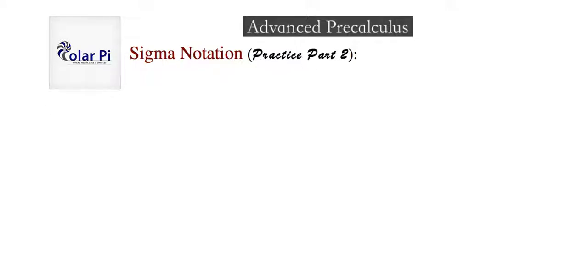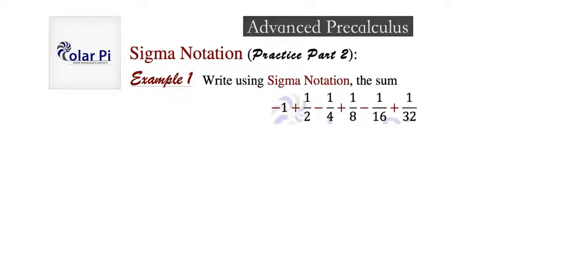Hey guys, practice part two here, and we'll have a total of five examples of which this is the first. And this first example is pretty straightforward. What we have to do is write this sum here in closed form using sigma notation.